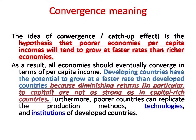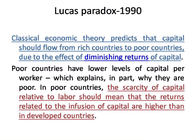Diminishing returns are not as strong in capital-rich countries. Poorer countries can replicate the production methods, technology, and institutions of developed countries. Classical economic theory suggests that capital should flow from rich countries to poor countries because of the effect of diminishing returns to capital — poor countries have a lower level of capital per worker, which explains why they are poor due to scarcity of capital relative to labor.